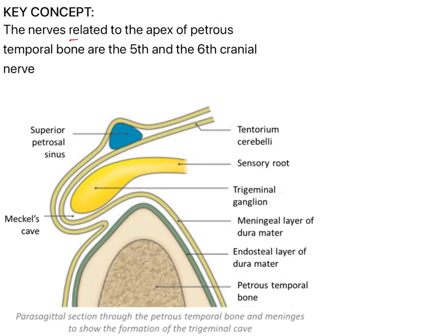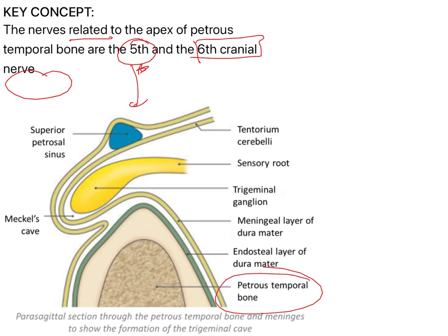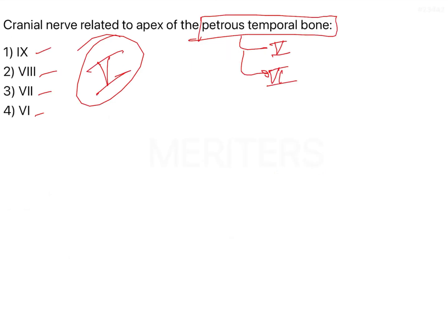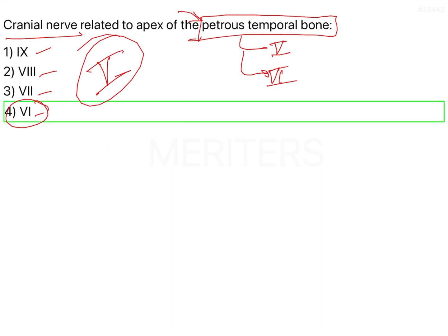Going to the key concept — the nerves related to the apex of the petrous temporal bone are the 5th and the 6th cranial nerves. The 6th passes through Dorello's canal as discussed, and here you can see the trigeminal ganglion at the sensory root of the trigeminal nerve — the 5th cranial nerve. So the cranial nerve related to the apex of the petrous temporal bone is the 6th, the abducent nerve, and the trigeminal nerve. Option 4 is the correct answer.